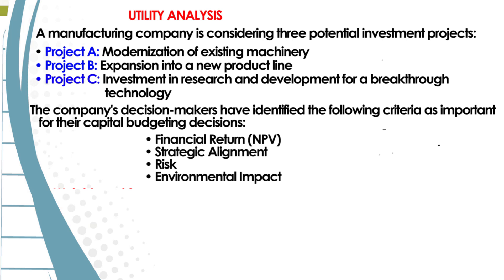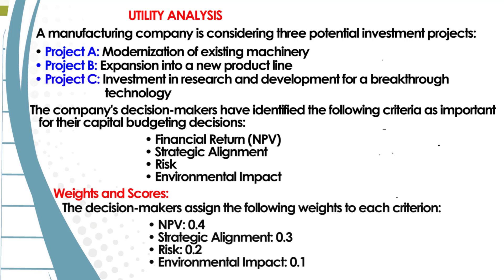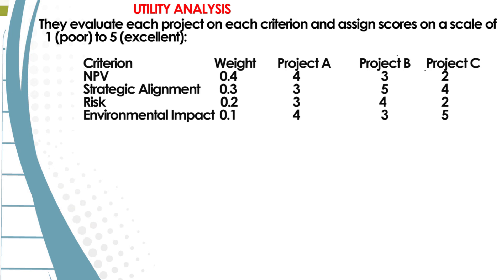The criteria are: financial return measured in NPV, strategic alignment, risk, and environmental impact. The decision makers assign the following weights to each criterion: NPV 0.4, strategic alignment 0.3, risk 0.2, environmental impact 0.1. They evaluate each project on each criterion and assign scores on a scale of 1 (poor) to 5 (excellent).